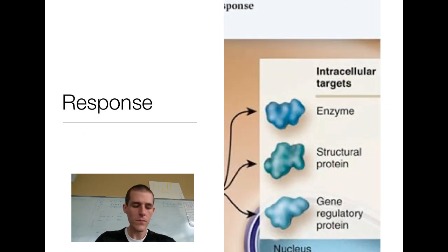And finally, the end is the response. So when that transduction pathway has run its course, the final molecule in it will cause some sort of response in the cell. Now, that response could be causing an enzyme to become active. It could be causing a structural protein to move. It could be causing a gene regulatory protein to cause a gene to create more copies of a certain protein. There are hundreds of thousands of responses that could be resulting from the signal transduction pathway. So know those three steps, reception, transduction, response.